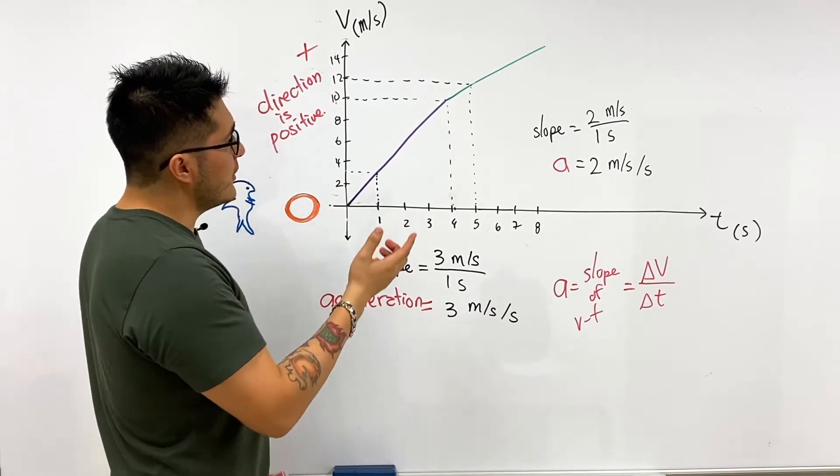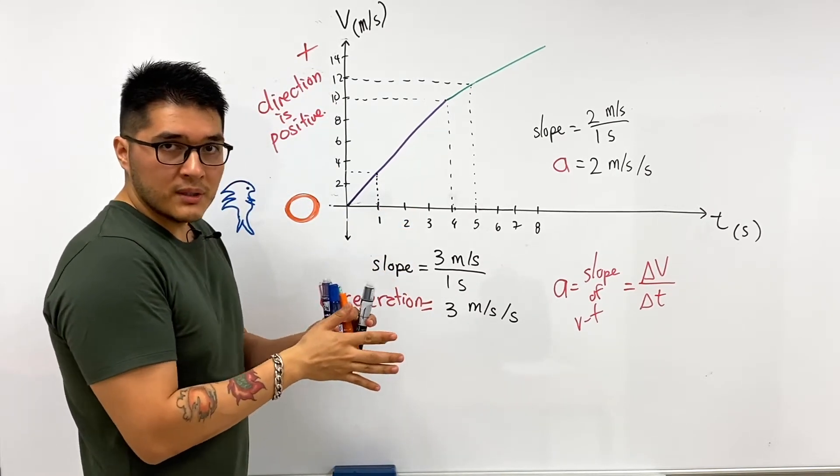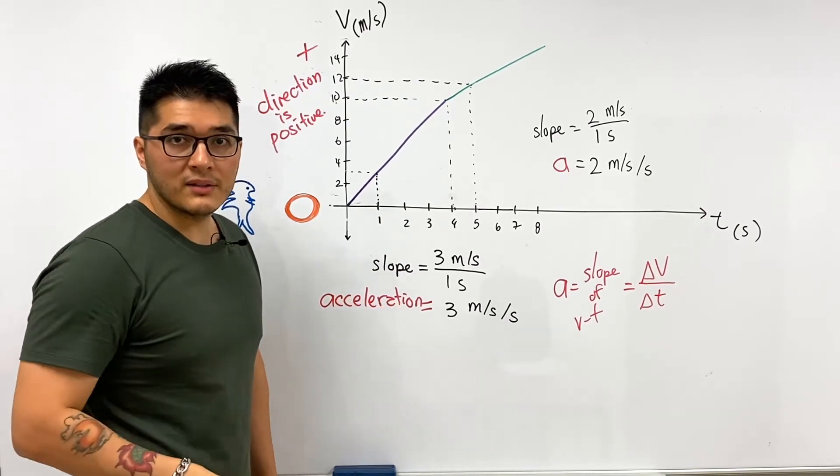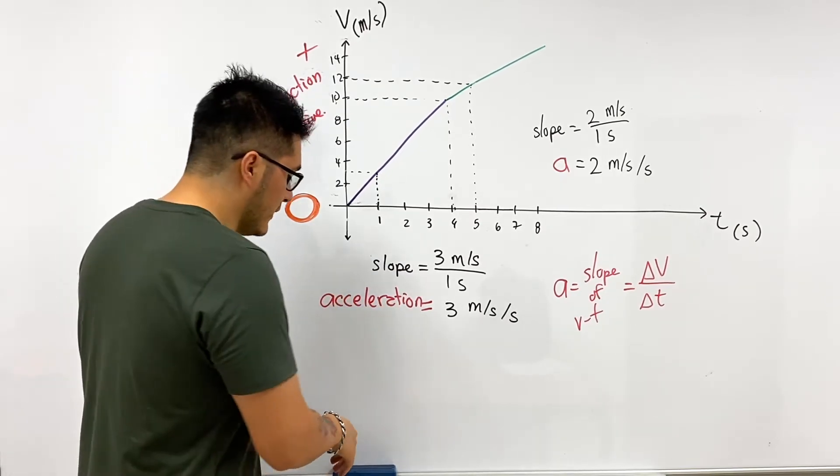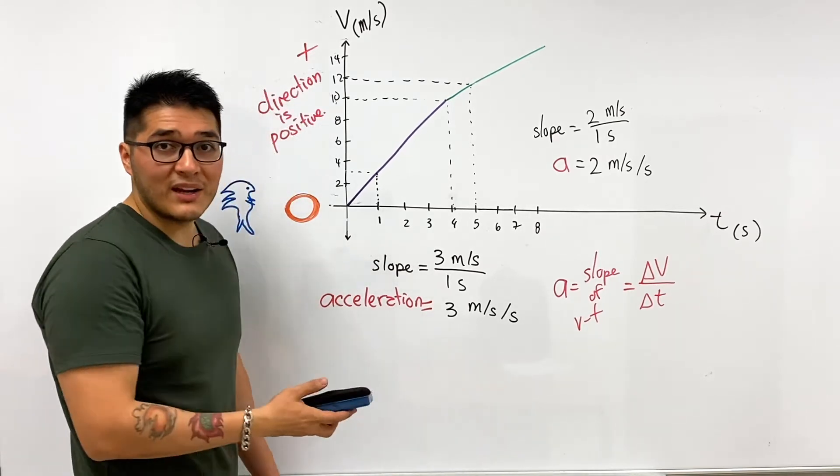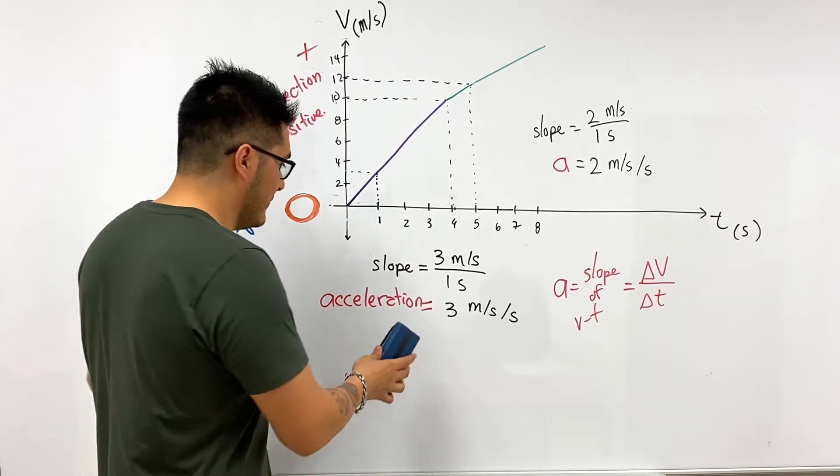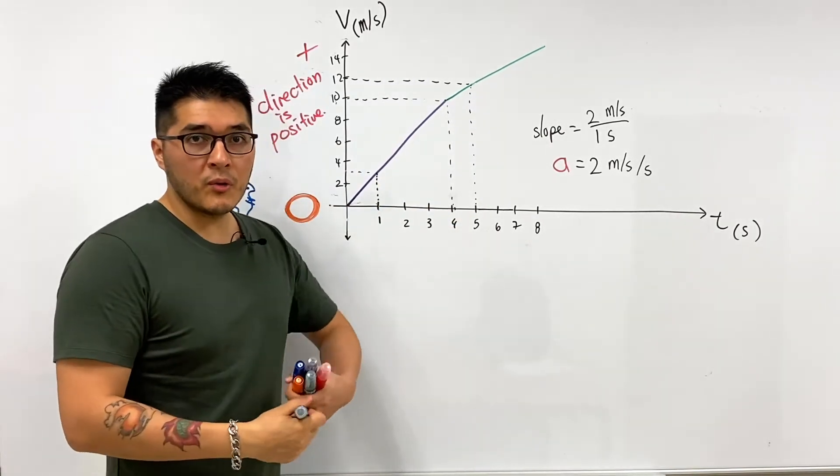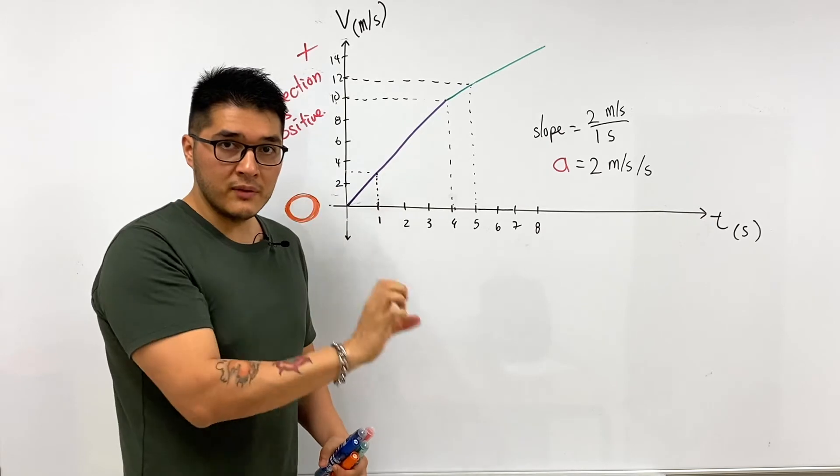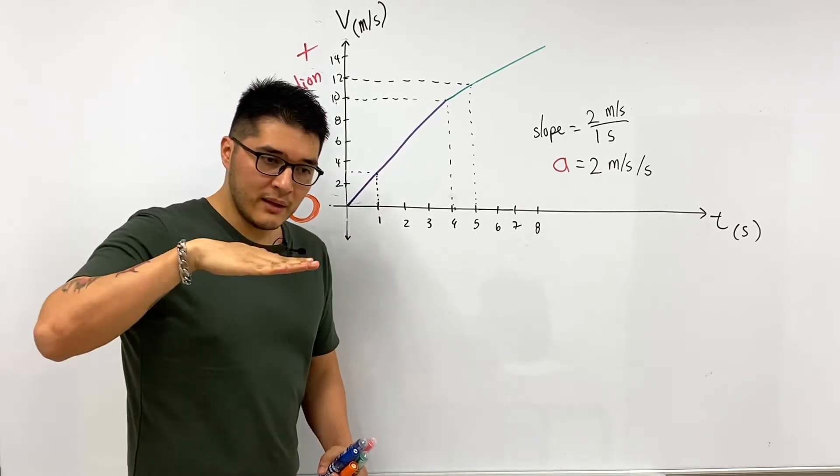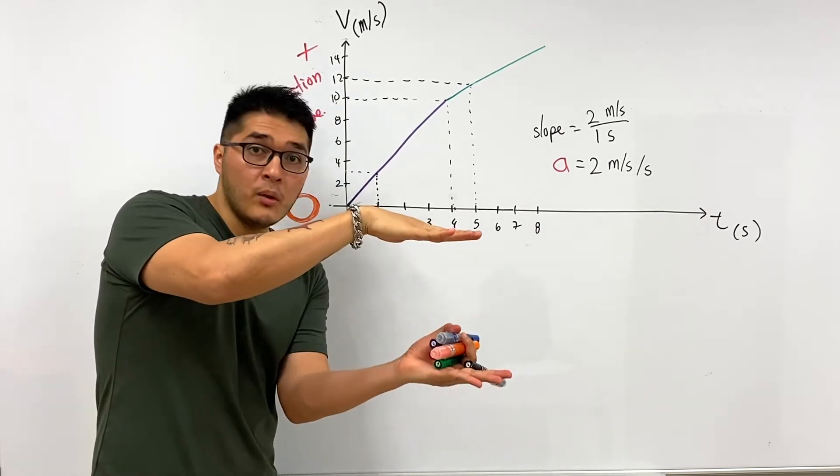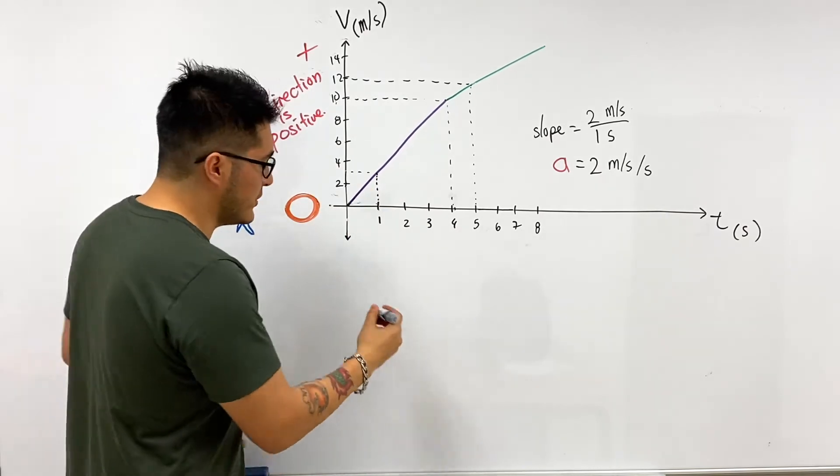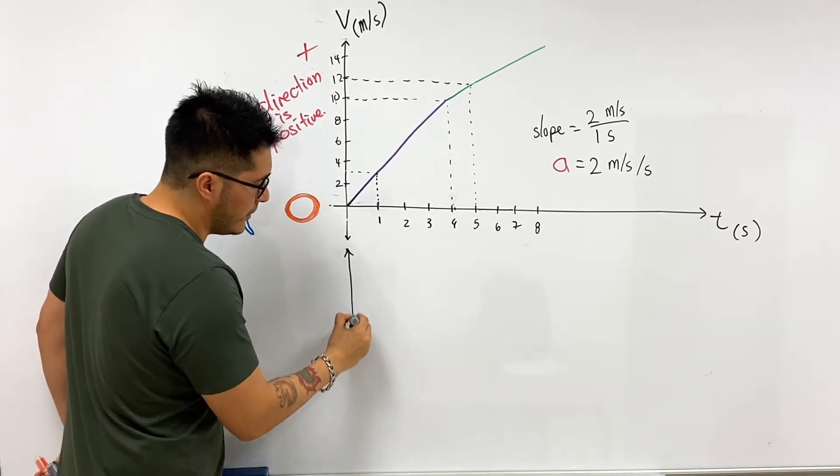But now we want to be able to show this in a different way, which we can just focus on how quickly velocity is changing with time. So in other words, we're going to be creating an acceleration versus time graph. So if you recall what we did before when we went from position time graph to velocity time graph, we had to line up the time axis to be nicely below one another. We're going to repeat something similar here, so we're going to make sure to draw our graph right below it.